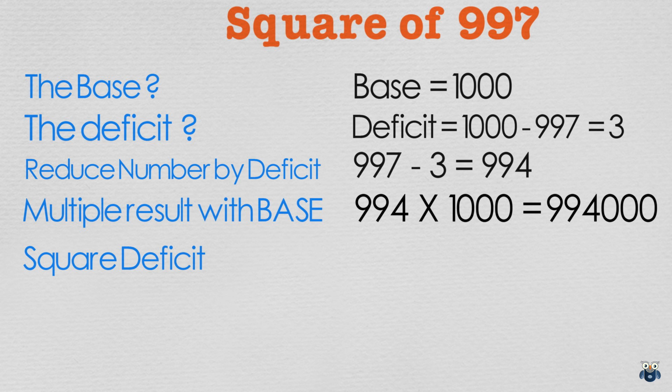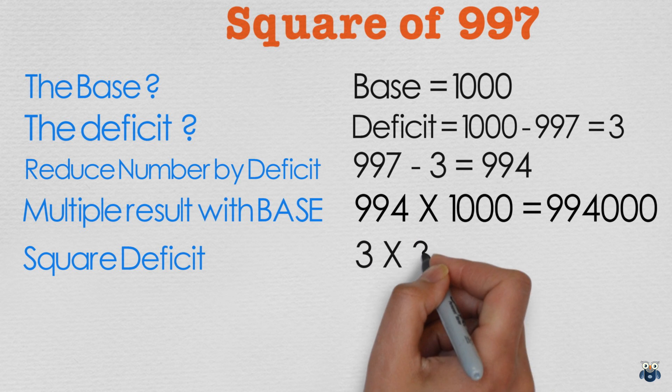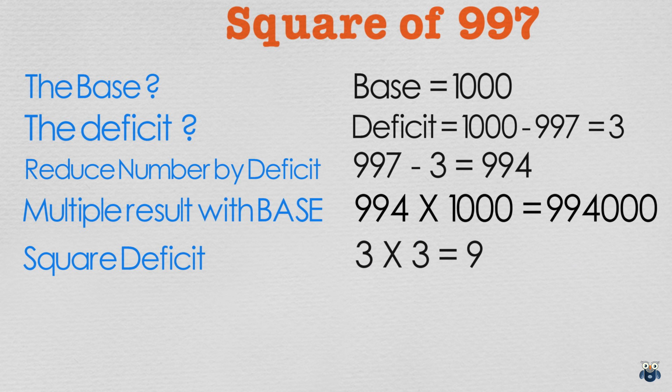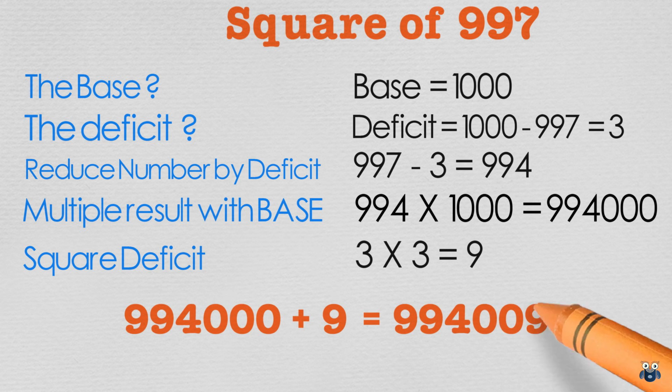We then square the deficit. 3 squared is 9. And finally we add both results. 994000 plus 9 gives us 994009 our final answer.